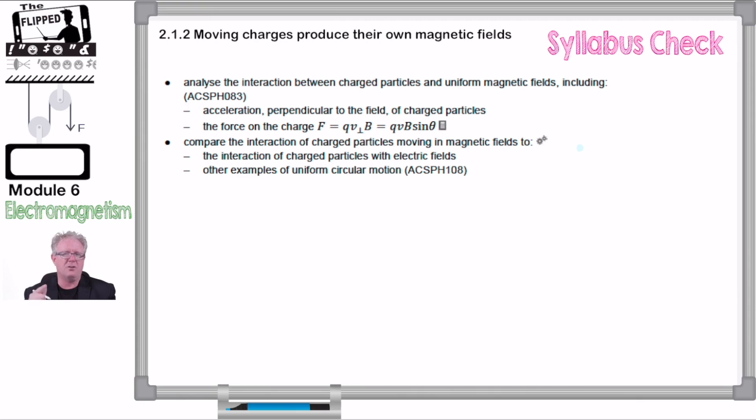But for now we're going to introduce a concept where what happens when we have a charge that's moving. If we look at the syllabus it says analyze the interaction between charged particles and uniform magnetic fields. So the charged particle we're going to make moving here. But we've got to understand what happens here first between a moving magnetic charge before it comes into contact with the magnetic field. That's going to be in the next video. So let's look at this first fundamental concept.